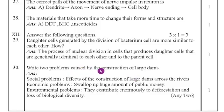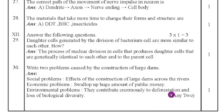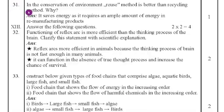The effects of constructing large dams across rivers include social problems, as well as economic problems because they consume huge amounts of public money. Environmental problems are also present — large dams contribute enormously to deforestation and the loss of biological diversity. Thirty-first question: in conservation of the environment, the reuse method is better than recycling because it saves energy, as recycling requires a large amount of energy in remanufacturing products.